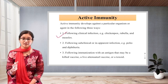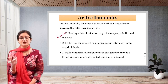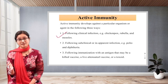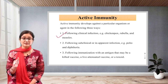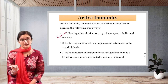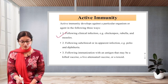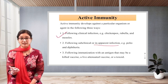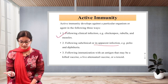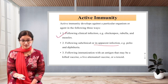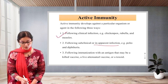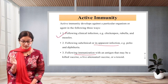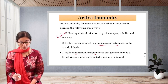As you know the clinical manifestations of chickenpox — you get blisters filled with fluid — once the infection has occurred and cured, the person develops antibodies inside. The second way is following subclinical or inapparent infection, which is asymptomatic — meaning there are no significant signs and symptoms — such as polio or diphtheria. The third is following an immunization with an antigen that may be a killed vaccine, live attenuated vaccine, or a toxoid. There are different types of vaccines available.